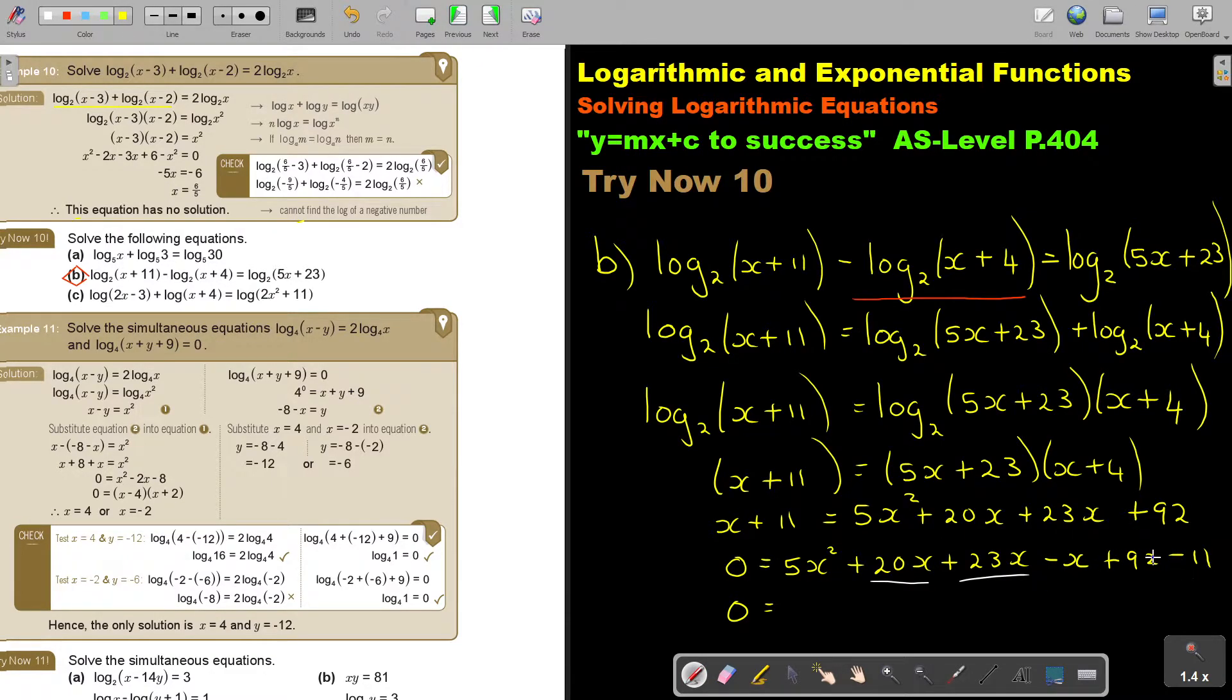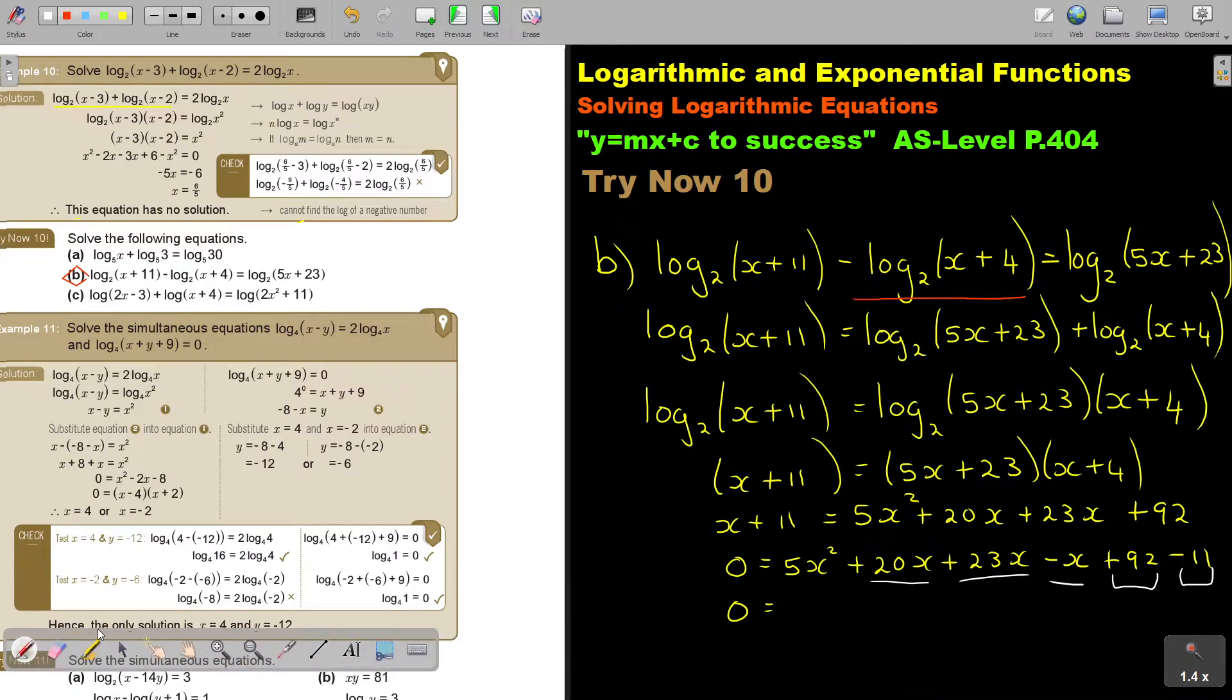I was thinking of that one. So negative x. So there is also a like term, and this is like, and this is like. So then I will get 5x squared, and then it's the 20 plus the 23 minus the 1, and that's 42, and then it's the 92 subtract the 11, and that's 81.